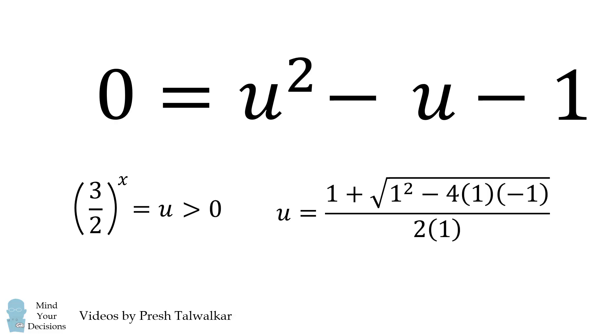We then use the quadratic formula and simplify. We get that u is equal to the golden ratio, 1 plus the square root of 5 all over 2.